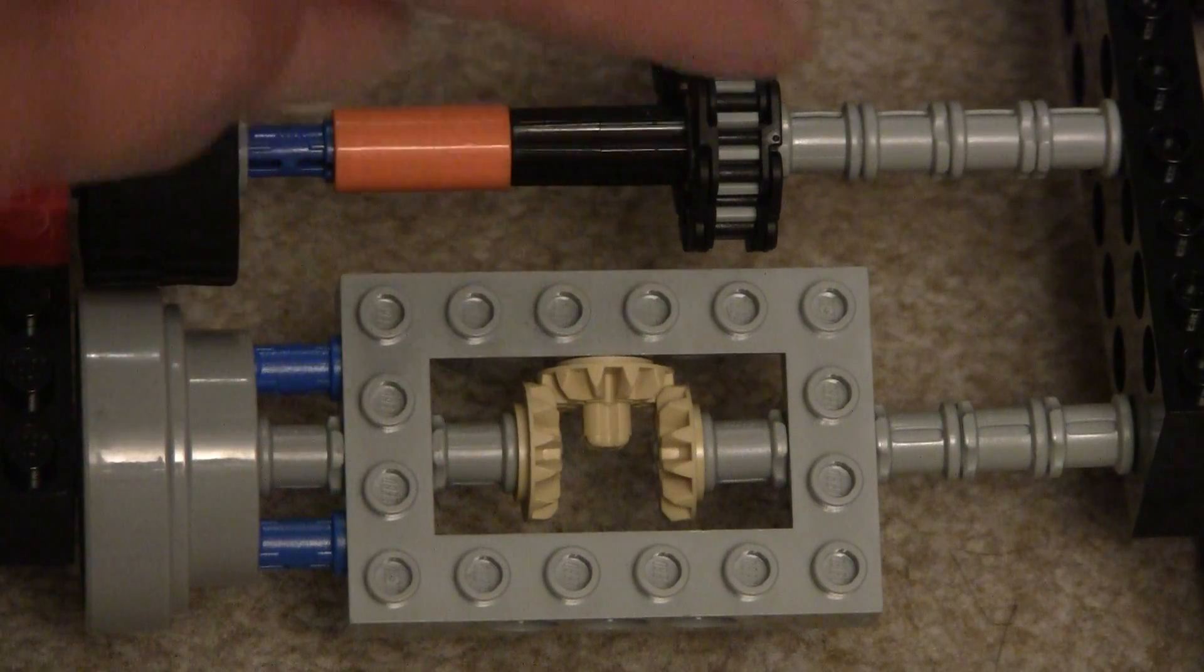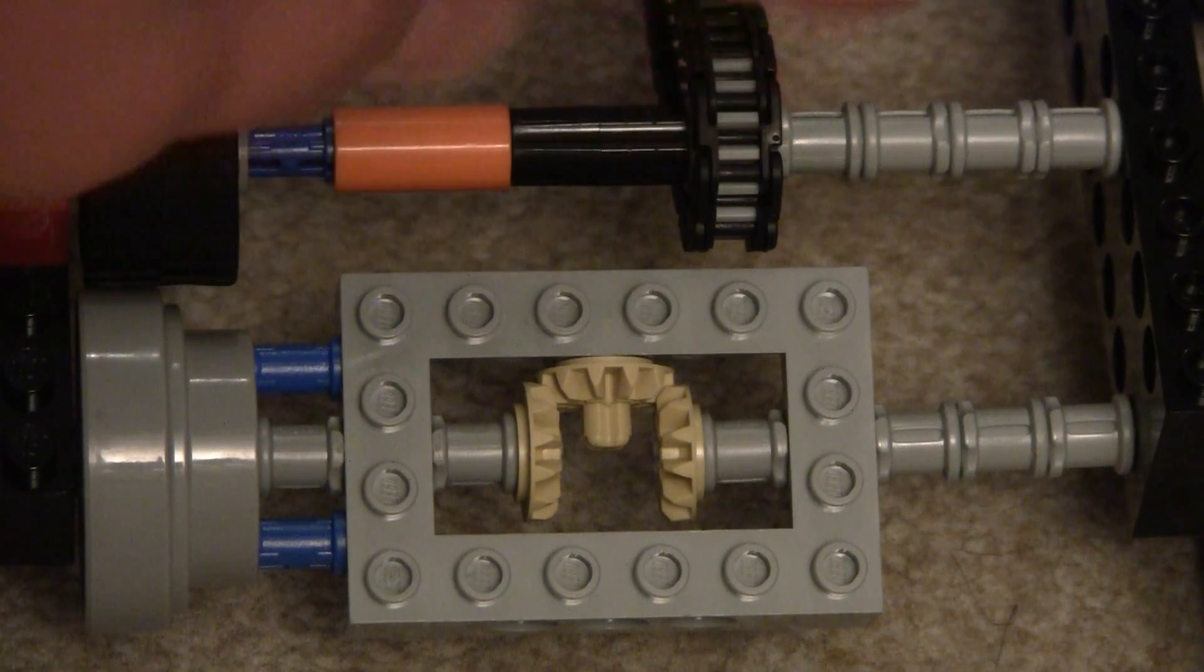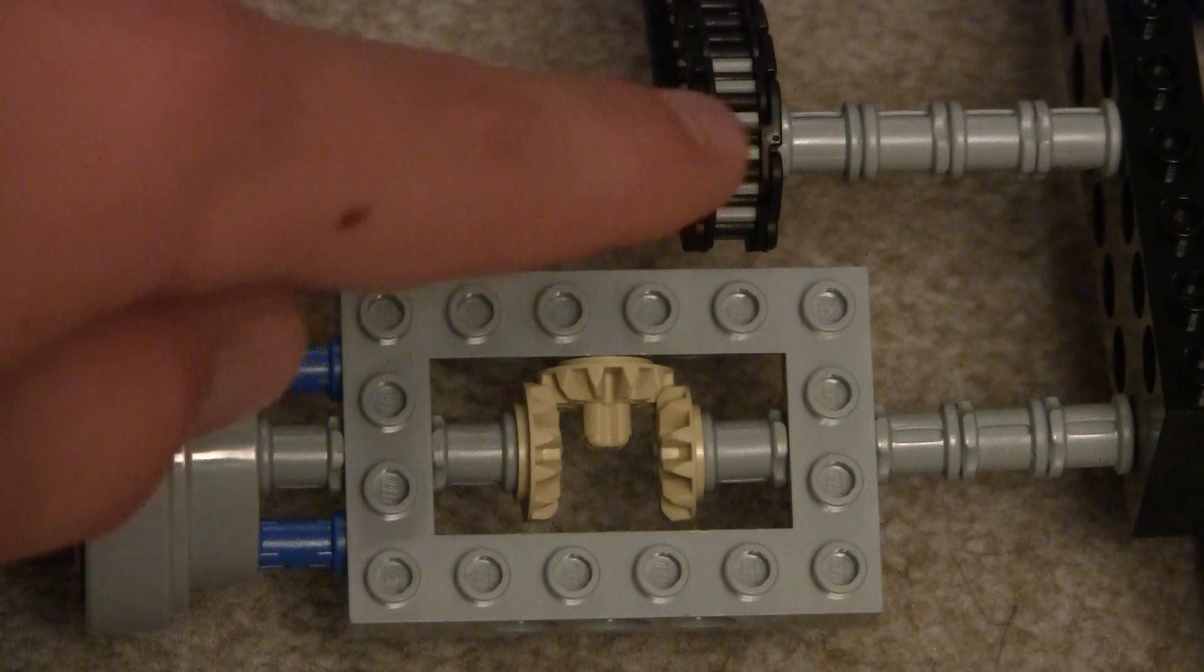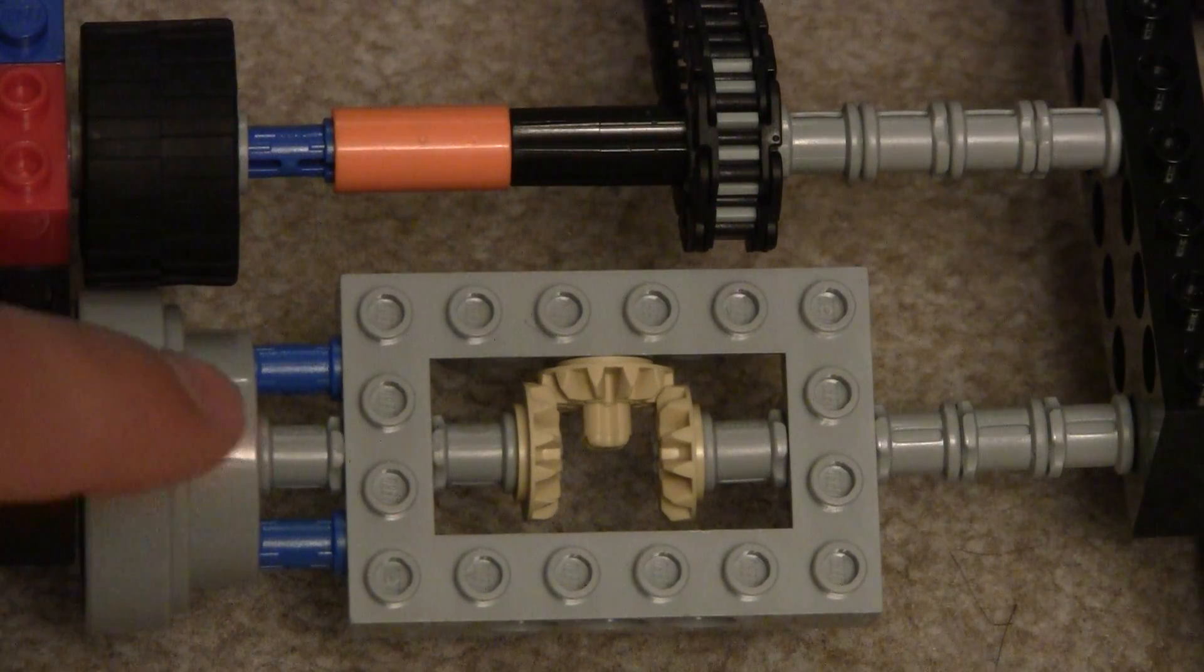Basically what happens is a motor will turn this, or in this case when I turn the back wheels, it'll turn this, which will transfer to this.